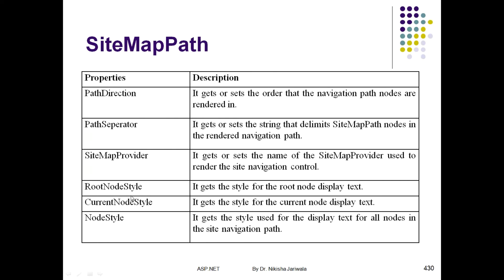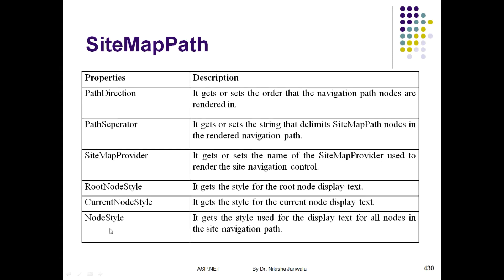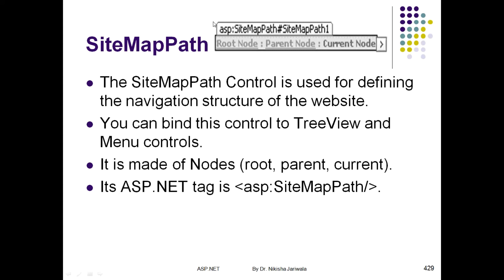Other properties include root node style, current node style, and node style. These allow you to change the appearance of particular nodes. You can change the text style, appearance of root node, current node, and you can also set a general node style which will apply to all nodes. So you can use these properties to work with the SiteMapPath control.